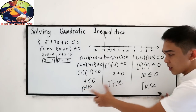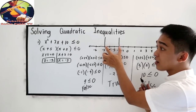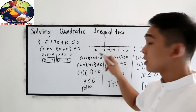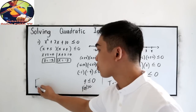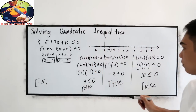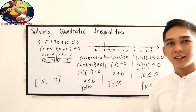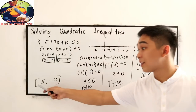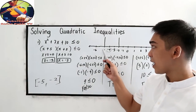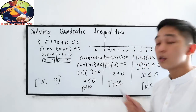Take a look at our answers: false, true, and false. That means the numbers in the middle region satisfy our inequality. So as our final answer, using interval notation, we write [−5, −2] with closed brackets — why closed? Because negative 5 and negative 2 are included. So the numbers that make our inequality true are negative 5, negative 4, negative 3, and negative 2.